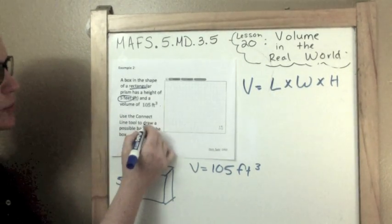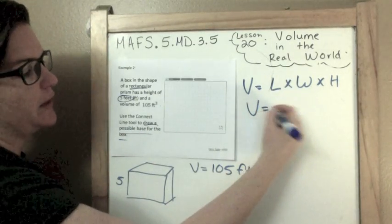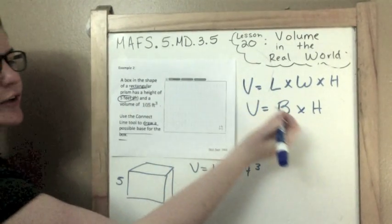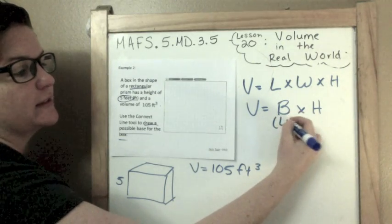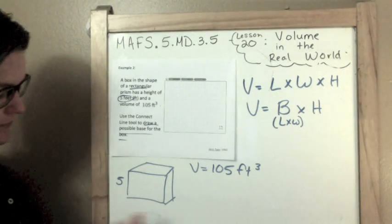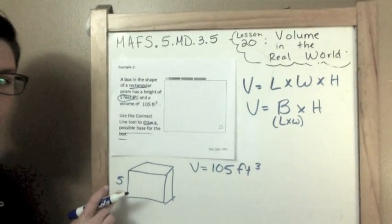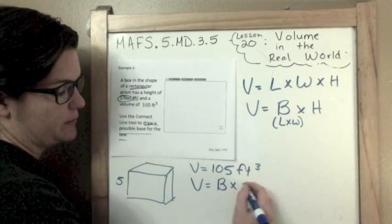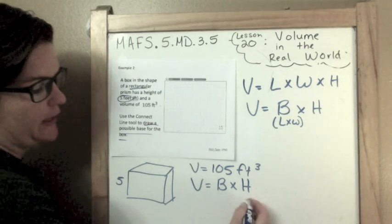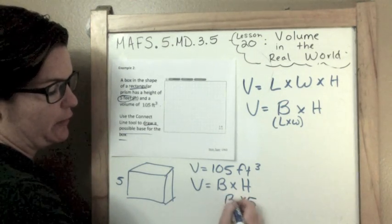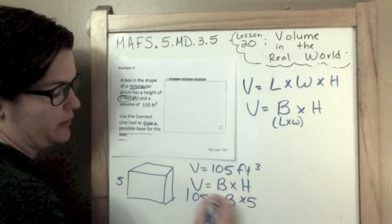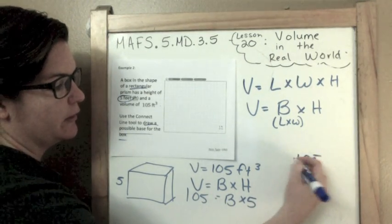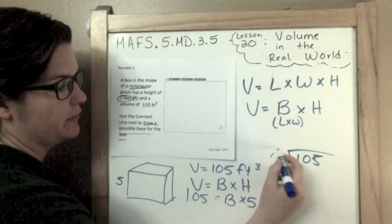Use the connect line tool to draw a possible base. Because we also have base times height could equal the volume. Because the base is really the length times the width. So, here's what we're going to do. We know what part of it is. So, if the volume equals the base times the height, and we know that our height is 5, and we're trying to find out what our base is, but we know that the volume is 105, then really, we could do 105 divided by 5.